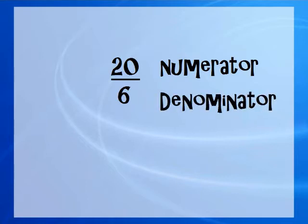In this case, our numerator is actually larger than our denominator, so we call this an improper fraction when our numerator is larger than the denominator.